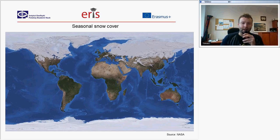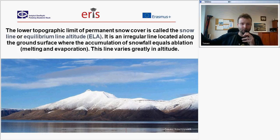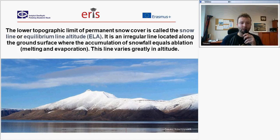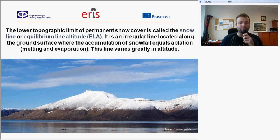Seasonal snow cover can extend on land. The snow can stay throughout the summer so it won't entirely melt. The topographic limit of permanent snow — snow that stays for continuous years — is called the snow line or equilibrium line altitude. This is an irregular line located along the ground surface where the accumulation of snowfall equals ablation. On this line, melting and evaporation are equal. Above it there is higher accumulation of snow, and below there is higher ablation, so the snow won't stay below this equilibrium line altitude.